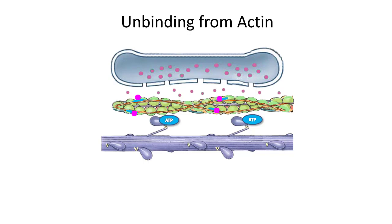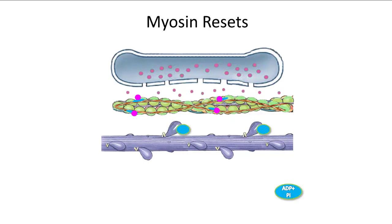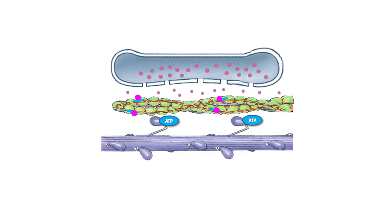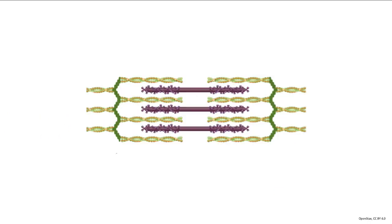Cross-bridge heads detach and reset with ATP. This cycle continues as long as calcium is bound to troponin. Let's see this on a basic level, bringing the sarcomere together.